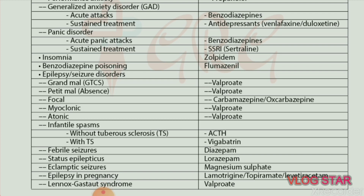Infantile spasm with tuberous sclerosis — drug of choice is vigabatrin. Febrile seizures — drug of choice is diazepam. Status epilepticus — drug of choice is lorazepam. Epilepsy in pregnancy — drug of choice is lamotrigine, topiramate, or levetiracetam. Eclamptic seizures — drug of choice is magnesium sulfate.